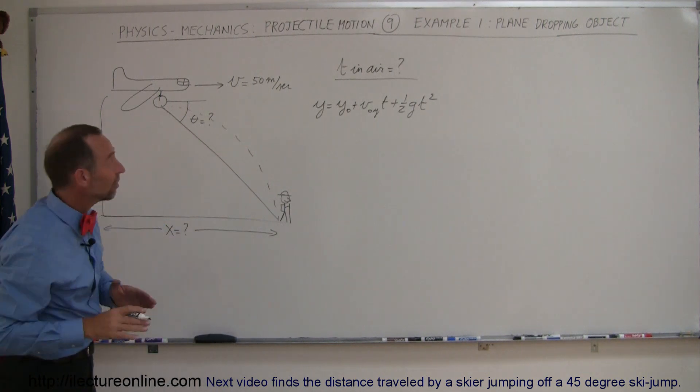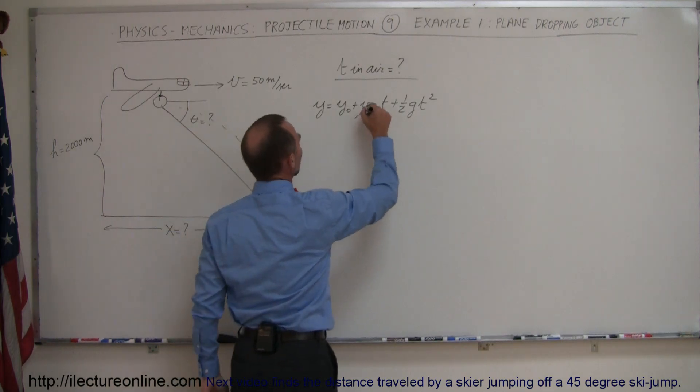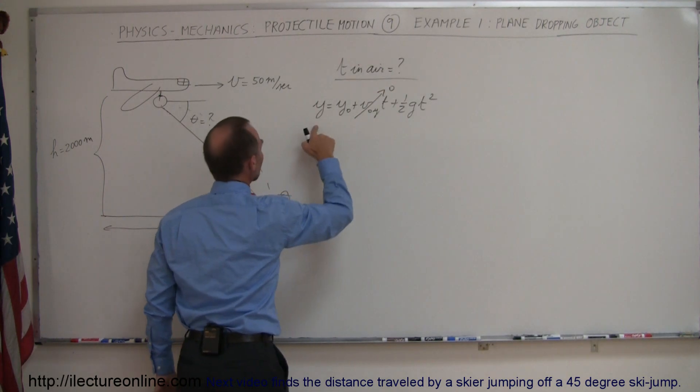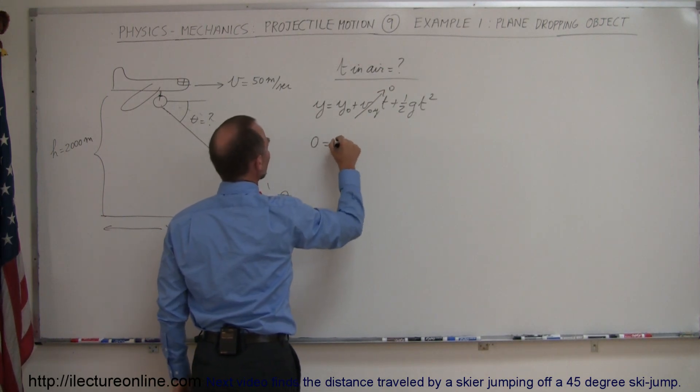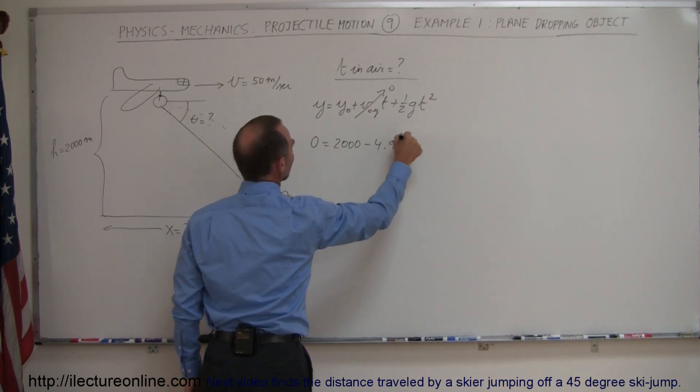Realizing here that in this case, there is no initial velocity in the y direction because it simply dropped from something flying at a level, so this goes to zero. The final height will be zero, so we can say zero is equal to 2,000 minus 4.9 t squared.